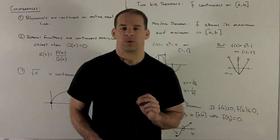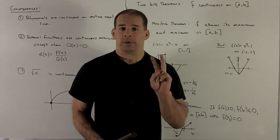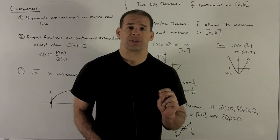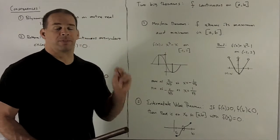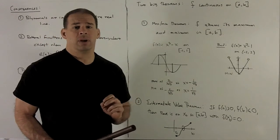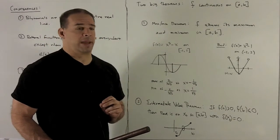All right, where does that leave us? Well, we have two big theorems for when we're continuous on a closed interval. So let's take a look at these. So first, I'm going to assume my function F is continuous on the closed interval from A to B.